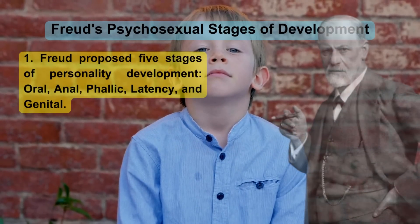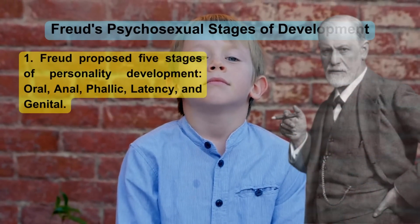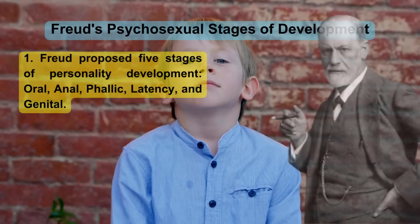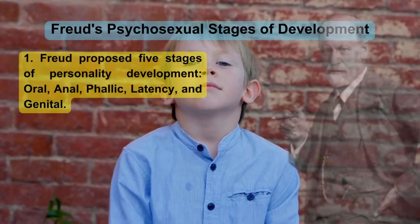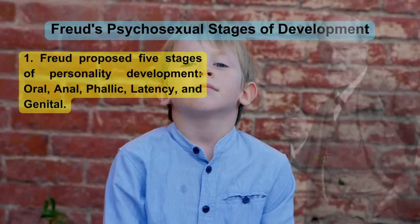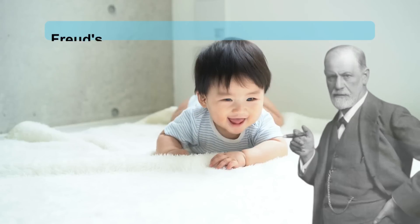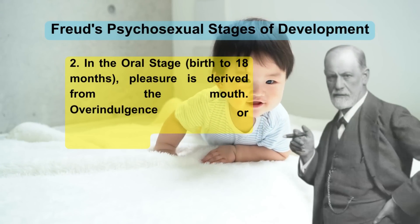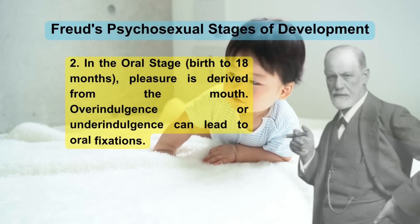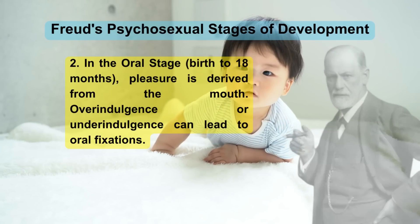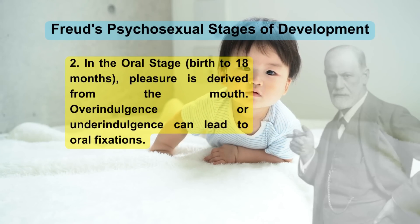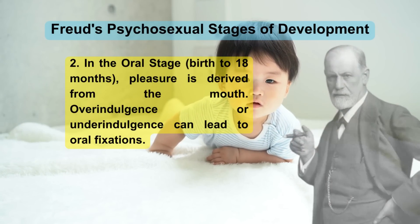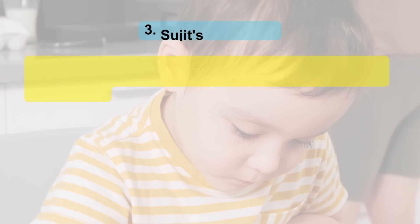Freud's psychosexual stages of development: Freud proposed five stages of personality development — oral, anal, phallic, latency, and genital. In the oral stage (birth to 18 months), pleasure is derived from the mouth. Overindulgence or underindulgence can lead to oral fixations.